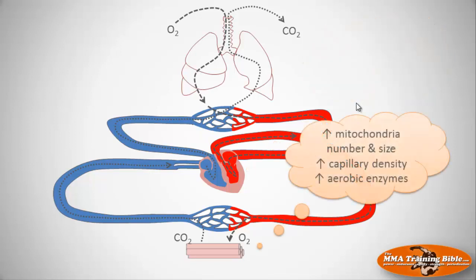At the muscle level, training increases the number and size of mitochondria, increases the density of blood vessels around the muscle, and increases aerobic enzymes — all of which have the effect of increasing oxygen use inside the muscle.